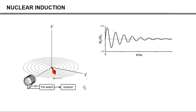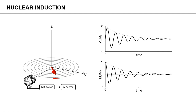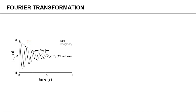It is referred to as the free induction decay, or FID. If we observe it along the x-axis, it looks like this. You can also observe it along the y-axis, then it looks like this. And ideally, you observe it along both axes at the same time. When we do that, then typically the signal is combined into a complex-valued signal, in which the real component corresponds to, for example, the x-component, and the imaginary component corresponds to the y-component.